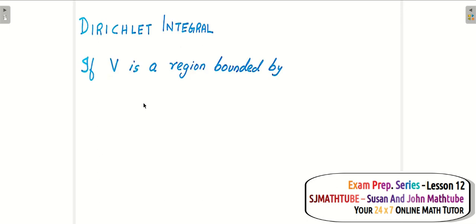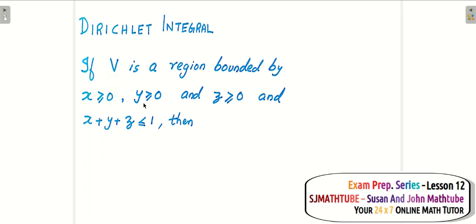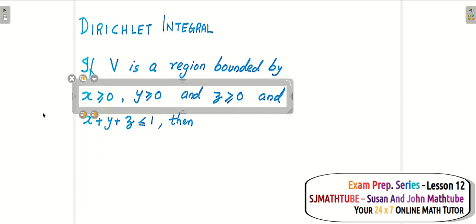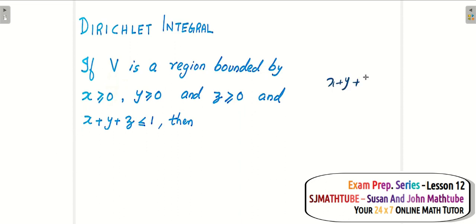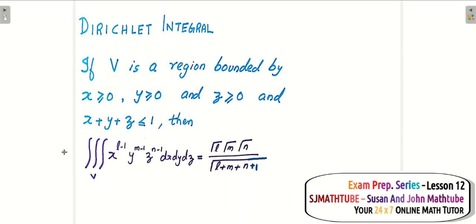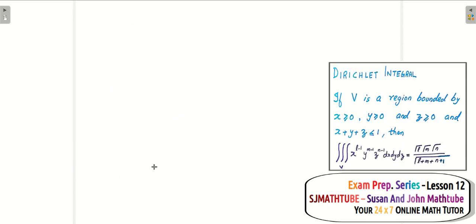The statement of Dirichlet's integral goes like this: if V is the volume region in three-dimensional space bounded by X ≥ 0, Y ≥ 0, and Z ≥ 0 — that simply means the first octant — and by the plane X + Y + Z = 1, that creates a tetrahedron cutting the X, Y, and Z axes at 1. We have a formula for the integral, and the answer is given in terms of the gamma function. Even though the integral looks unusual, it is helpful in solving many problems. I'll keep Dirichlet's integral on the right side of the screen.